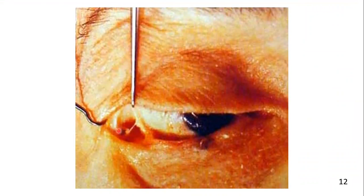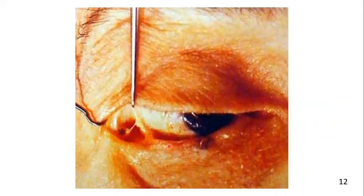This picture is taken from a cadaver, showing the dissection of the lateral canthal tendon. When it is transected, you can easily evert the lower eyelid for maximal exposure.